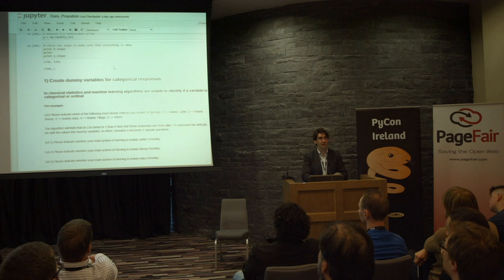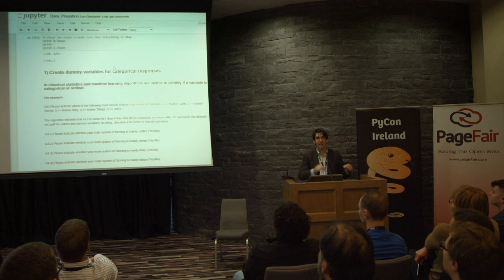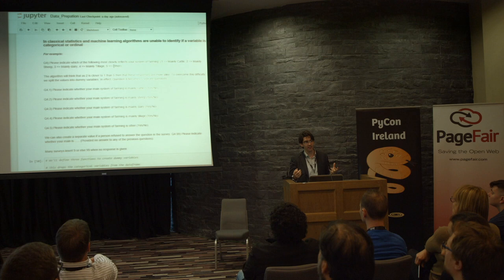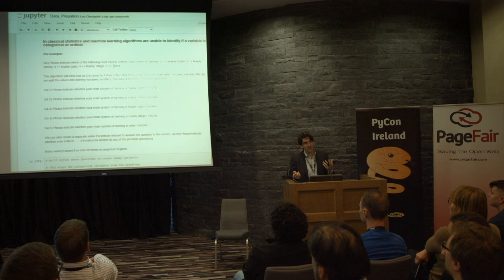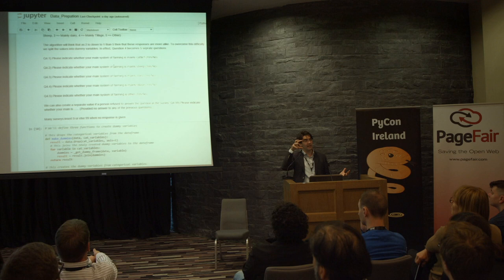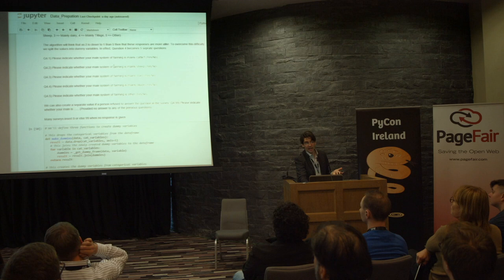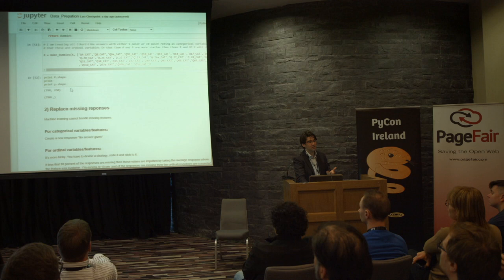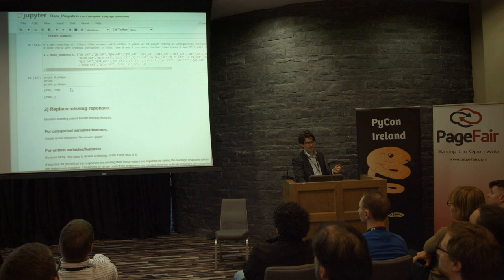One thing that Scikit-Learn can't handle is it can't tell whether a variable is categorical or ordinal. For example, the question 'please indicate which of the following most closely reflects your main system of farming' gave values like mainly cattle, mainly sheep, etc. It would think number one is closer to number two than number five. So economists call this process creating dummy variables — you take a categorical question and turn it into five separate binary questions: 'is your main system of farming mainly cattle? Yes or no.' I went through the dataset, identified the categorical ones, and suddenly went from 120 questions up to 260. My dataset has widened out.